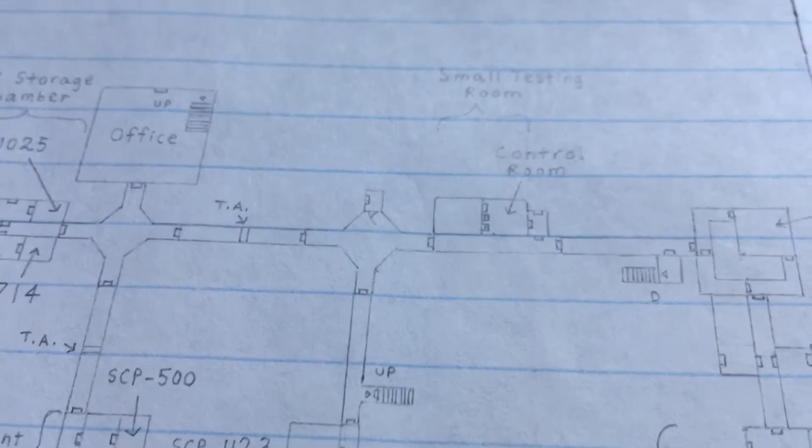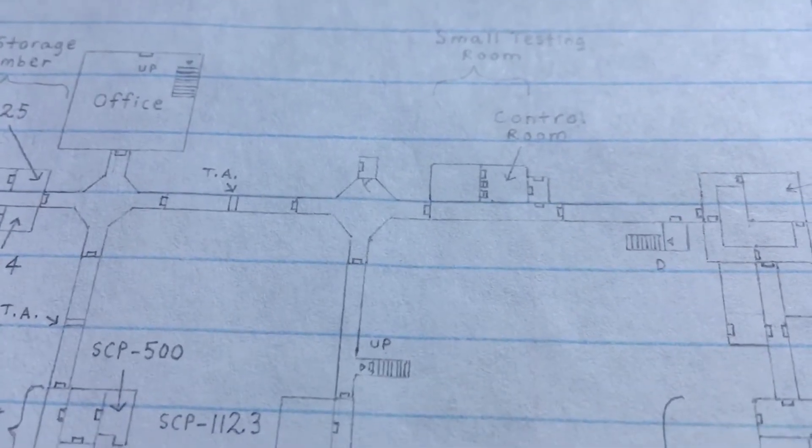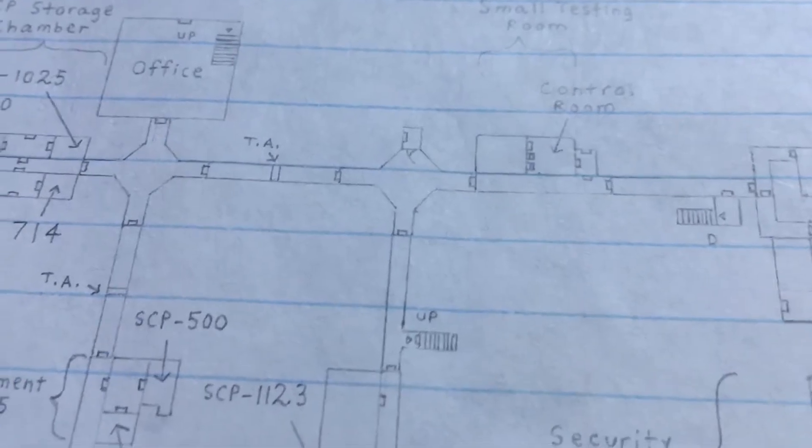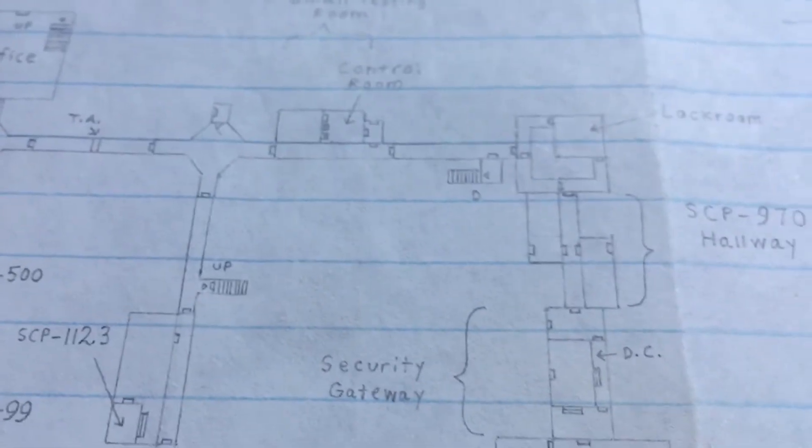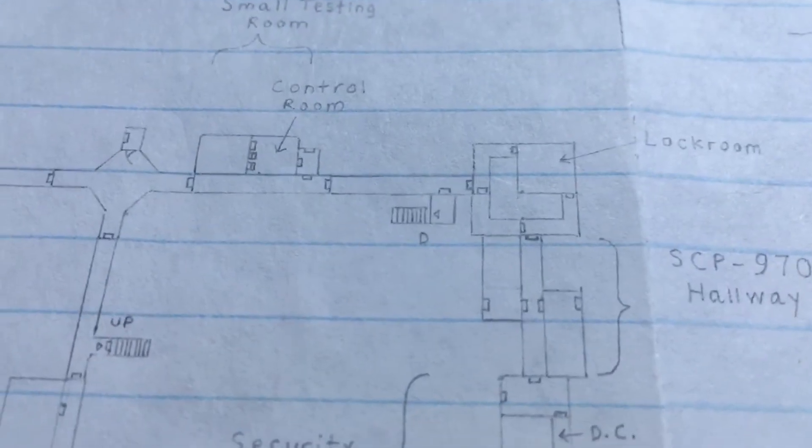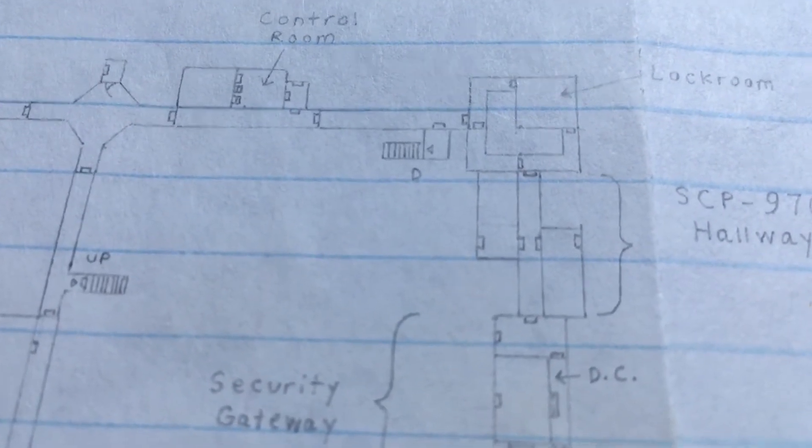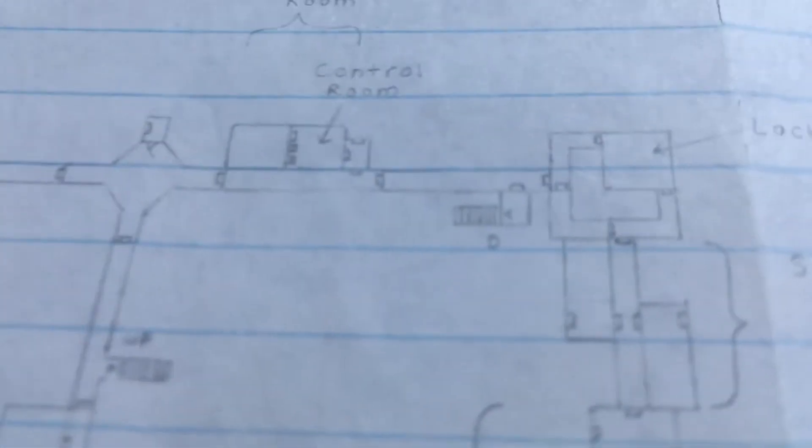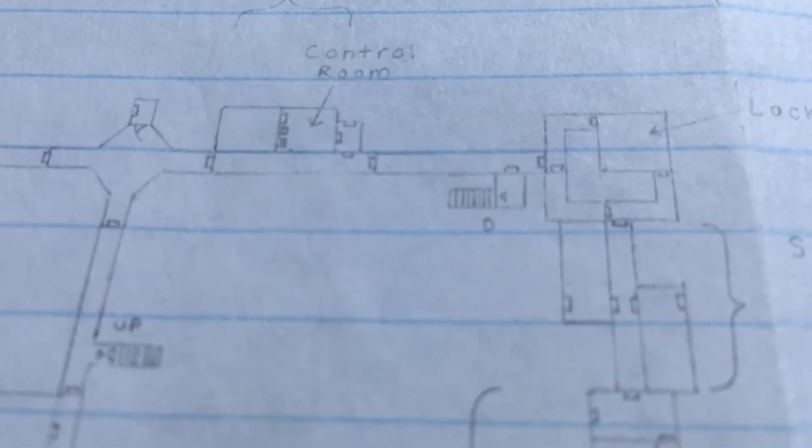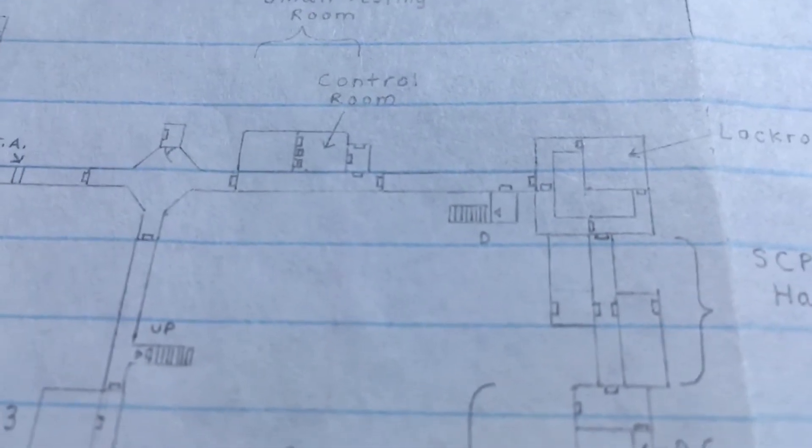Light containment - if you go left, there's a small testing room where you can get a level two keycard. Lockroom - these are lockrooms where you have to press a button and quickly run in, because if you don't make it in time you get trapped in there, which is pretty stupid.